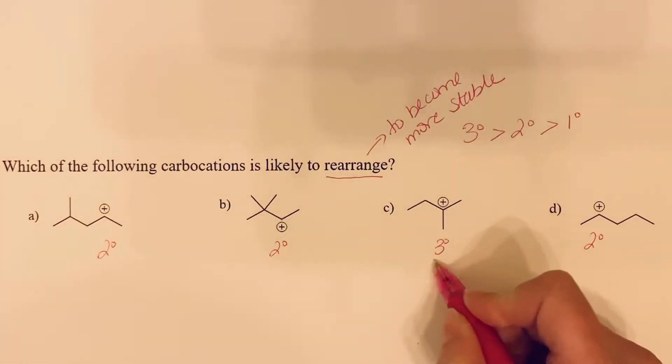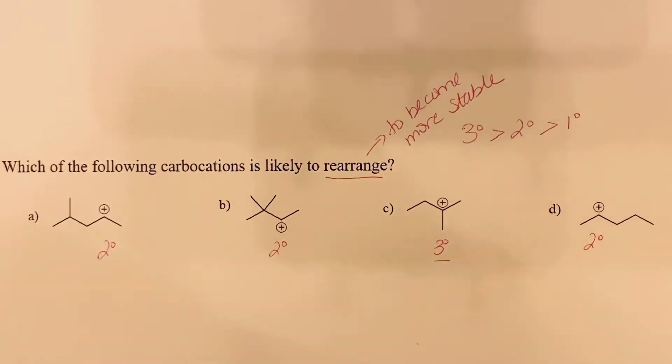So the tertiary cation is already as stable as it can be; that will not rearrange. In looking at the secondary carbocations, what we want to look for is if we have a group on a next door atom that can shift to make it into a more stable tertiary carbocation.